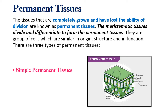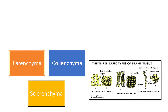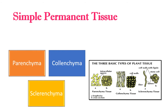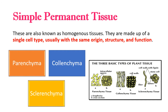Permanent tissues are a group of cells which are similar in origin, structure and function. There are 3 types of permanent tissues: simple permanent tissues, complex permanent tissues, and special or secretory tissues. Simple permanent tissues are also known as homogeneous tissues — homogeneous means uniform — as they are made up of a single cell type, usually with the same origin, structure and function. There are 3 types: parenchyma, colenchyma and sclerenchyma. You can also see the structure and diagram of these tissues in the adjoining figure.